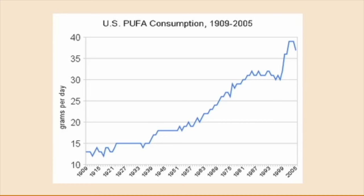Looking at polyunsaturated vegetable oil consumption in the United States — from virtually zero before 1911 with Crisco, up to today where it's 9–10% of all calories we consume — this almost perfectly parallels the rise in heart disease. So it seems absurd that we should think this would fight heart disease when our increased consumption correlates with the rise in heart disease. It certainly didn't seem to prevent it.